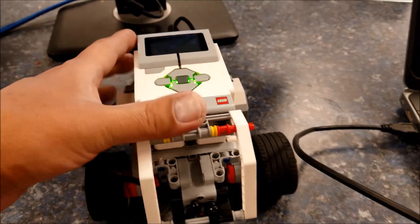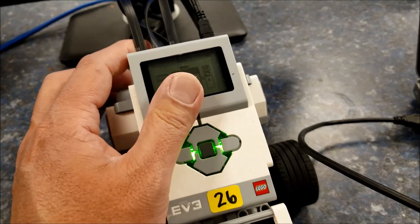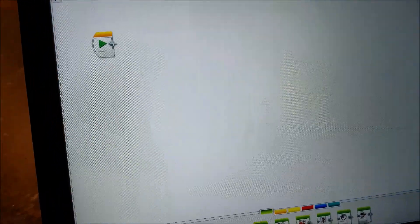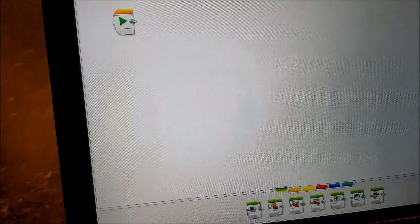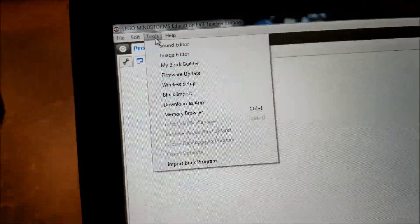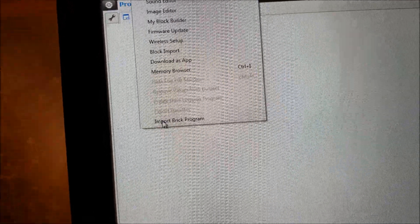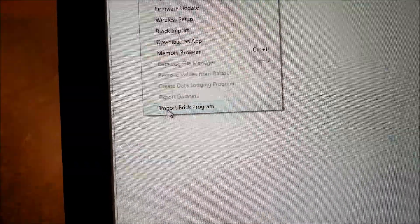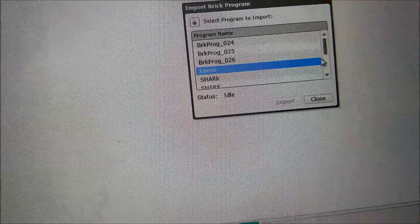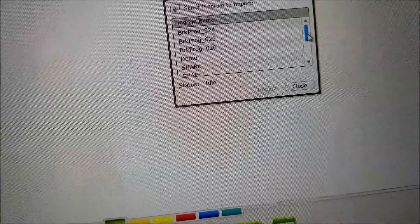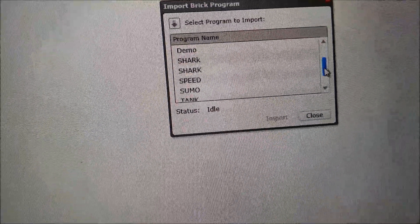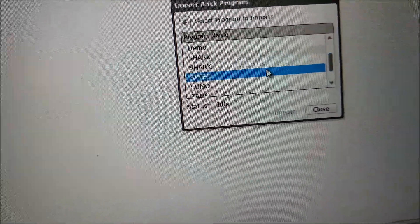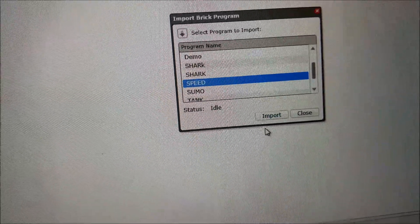I have a quick brick program here, it's just gonna be forward for one second. So if we go over here to my laptop, let me show you real quick how to get this brick program imported. You're gonna go up to tools, click on import brick program. I called it speed. There's speed right there and then you just click import.